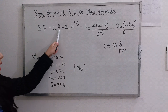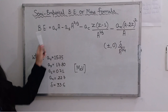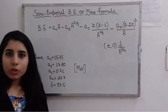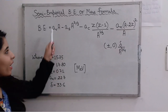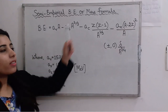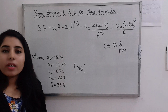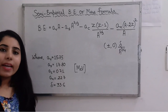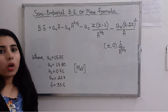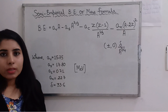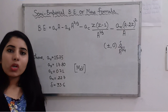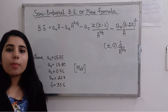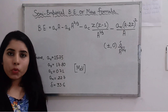The binding energy formula is written as one complete expression. The terms present in the formula are: a_v, a_s, a_c, a_n, and delta - these are the constant coefficients. These constants have certain standard values we generally use, but they are not completely fixed - different sets of values can exist. The values may also be given in the question, and if not given you can use these standard values. All these values are in units of mega electron volts.